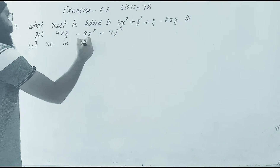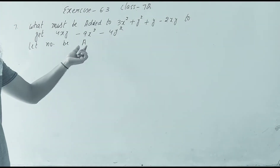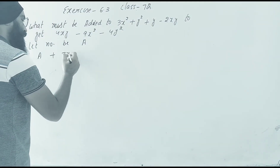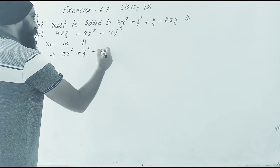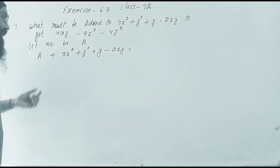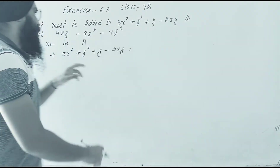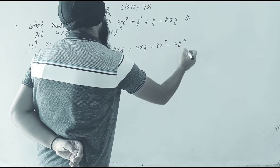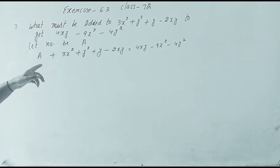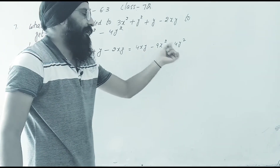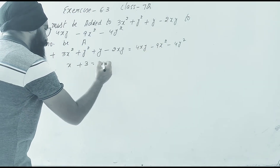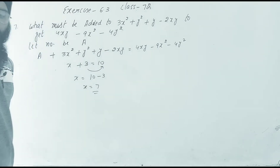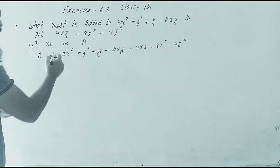Let the number be a. So a is what we can add. We apply the same method here: x + 3 = 10, so x = 7. Now we can do the same — we write an expression. Whatever is on the right side, we can write the expression.